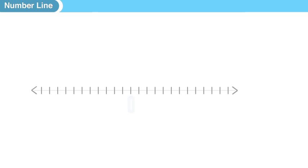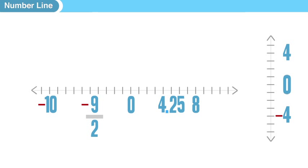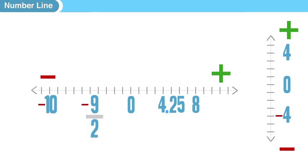The number line is a way to put numbers in order and compare their position relative to one another. It can be written horizontally — side to side — or vertically, up and down. In both cases, zero is at the center, and the positive numbers are written to the right or to the top. Negative numbers are written to the left if horizontal, or below if vertical.